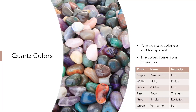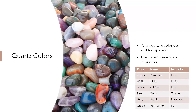Quartz is not the only mineral that does this. Halite, fluorite, tourmaline, and others do this too. We call the different colors a different species of that mineral, and that's a very common thing. And because it's such a common thing, we don't use color very much as evidence to help us identify a mineral.